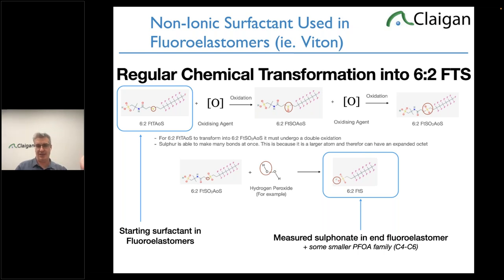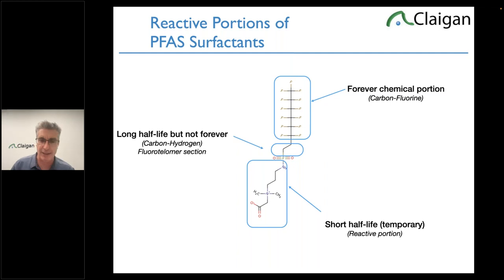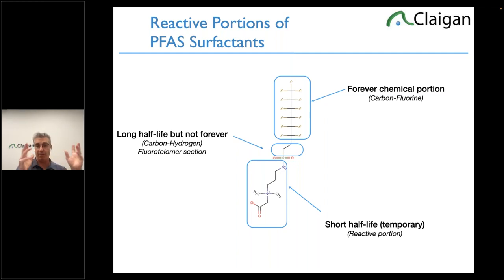The reason there are thousands of PFAS is that this reactive bottom piece can be infinitely varied, and you can make the carbon-fluorine chain different lengths (C6, C8, etc.). But the bottom piece is very temporary — it's reactive and falls off — leaving the six carbon-fluorines and two carbon-hydrogens with sulfur: 6:2-FTS. That's why whatever family of surfactants is used, we find 6:2-FTS. Most of the original surfactant chemicals are confidential/proprietary, but they all end up as 6:2-FTS.